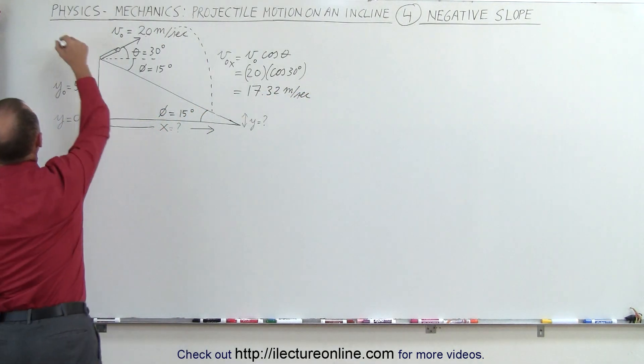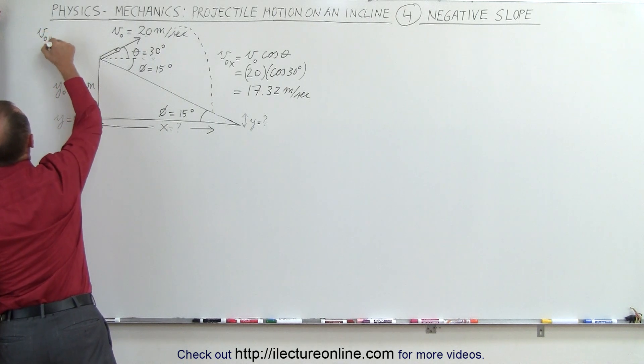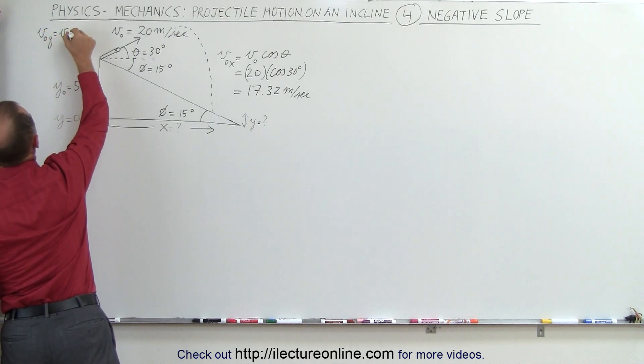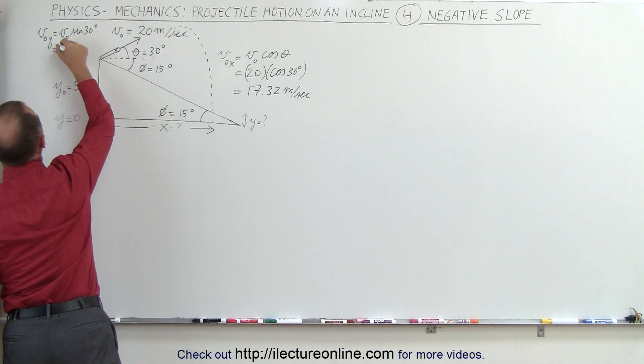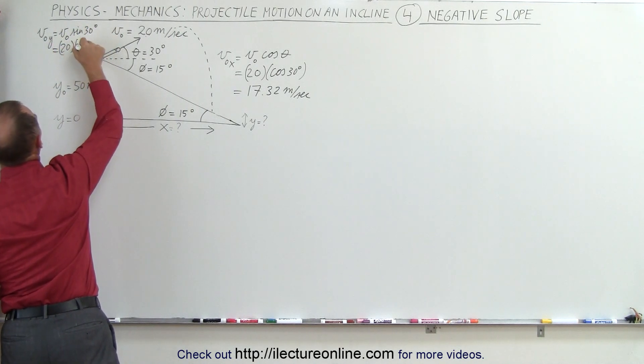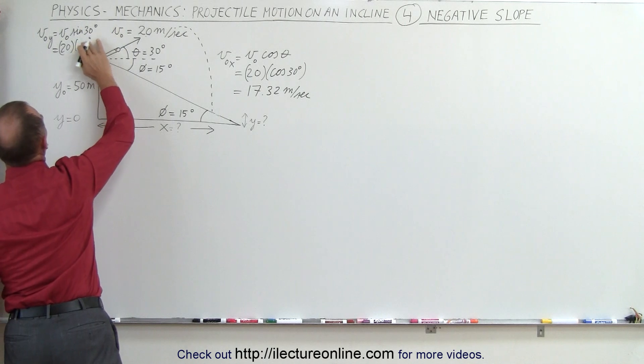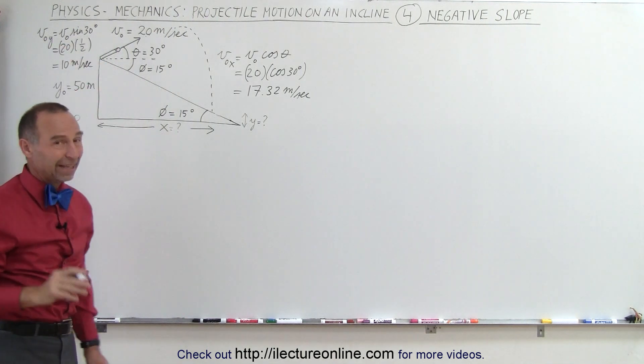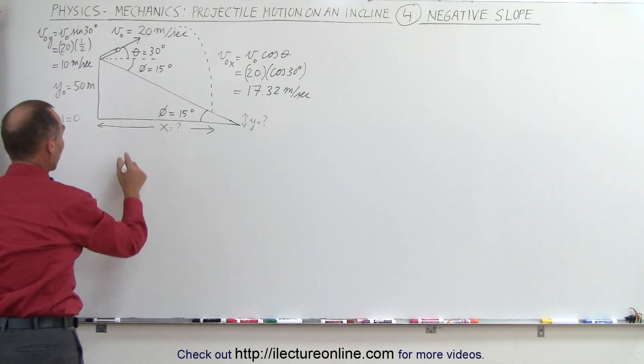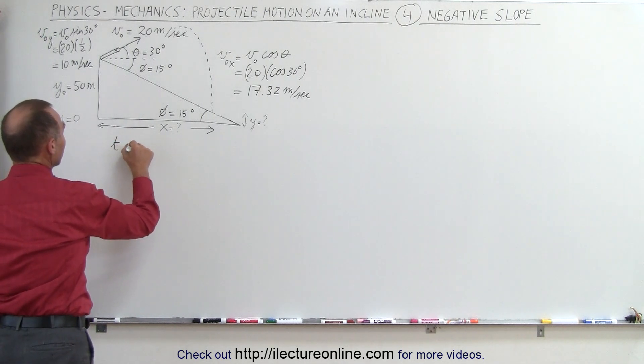Doing the same for the y direction, we have v initial in the y direction, which is v initial times the sine of 30 degrees. And of course, in this case, that would be 20 times the sine of 30. That would be one half. And so therefore, this would be 10 meters per second as the initial velocity in the y direction. And that's the one we need for this next equation because time in the air.